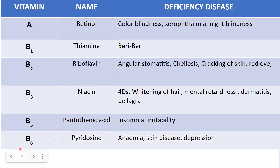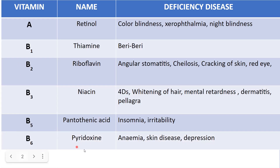Next is vitamin B6, called pyridoxine. Pyridoxine is responsible for the creation of RBCs, production of neurotransmitters, and metabolism of carbohydrates, protein, and fats. One key thing to remember: all vitamin B factors are essential for metabolism of carbohydrates, proteins, and fats, and for the creation of RBCs. Vitamin B6 deficiency is associated with anemia, skin diseases, and also depression.